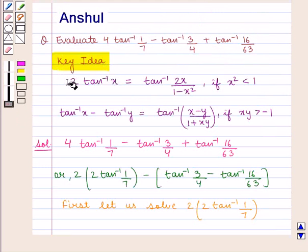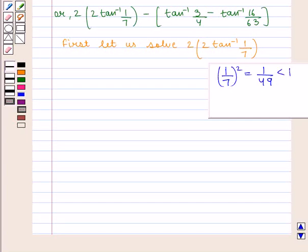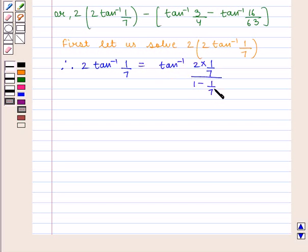From the key idea, we know that 2 tan inverse of x is given by tan inverse of 2x upon 1 minus x square, if x square is less than 1. Here we assume x as 1 by 7, and x square should be less than 1 — that is, 1 by 7 square, which is equal to 1 by 49, should be less than 1, which is true. Therefore, we can write 2 tan inverse of 1 by 7 as tan inverse of 2 into 1 by 7 upon 1 minus 1 by 7 square.